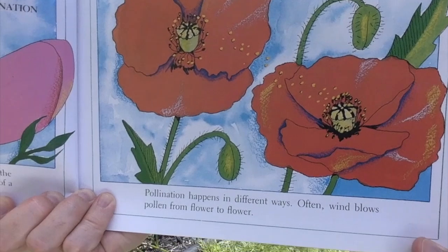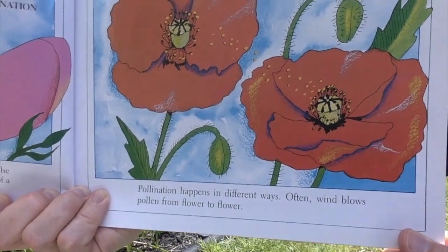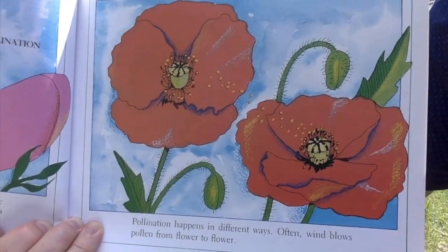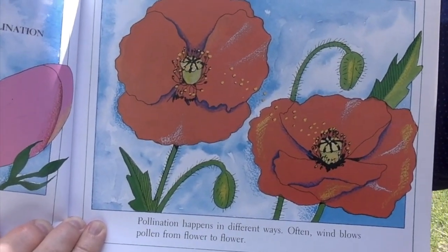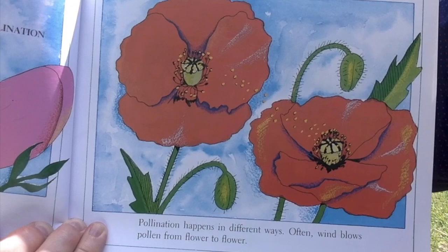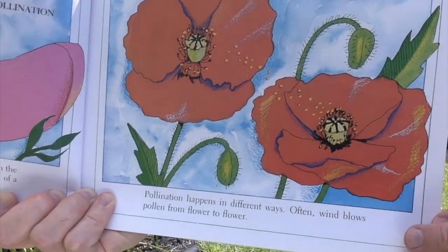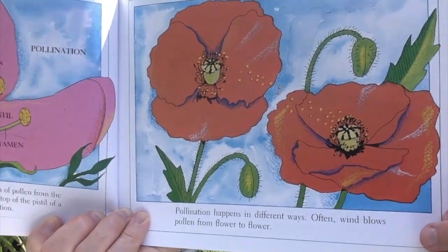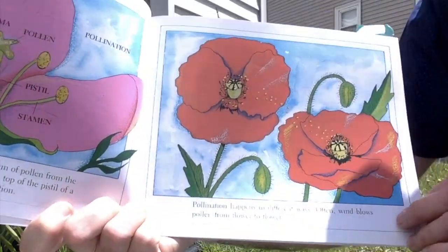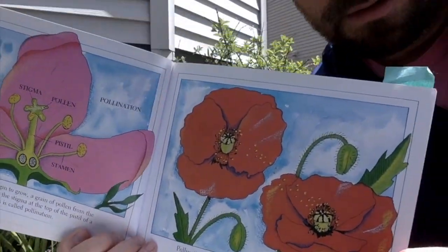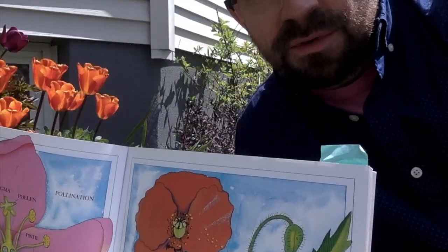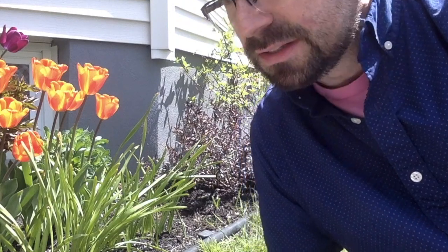Pollination happens in different ways. Often, wind blows pollen from flower to flower. Before we move on, let's see if we can look inside one of the flowers and see some of those parts.